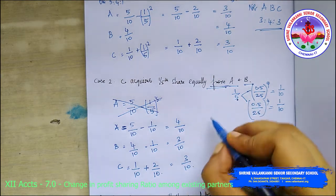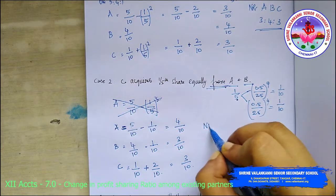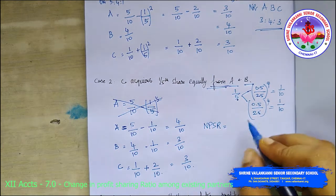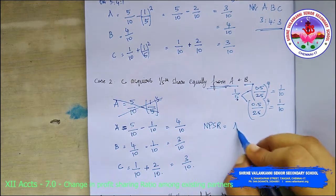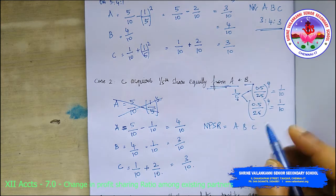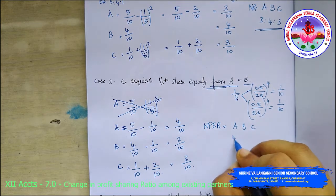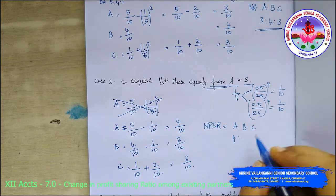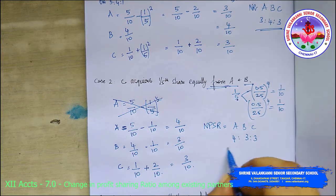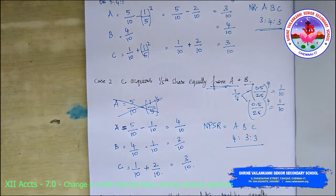So the new profit sharing ratio of A, B, and C is 4:3:3. This is the answer for Case 2. I hope that this is clear.